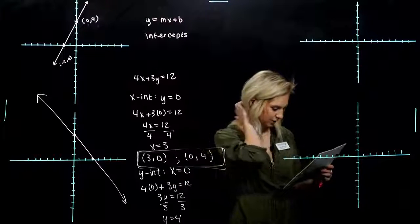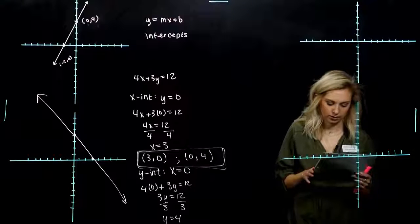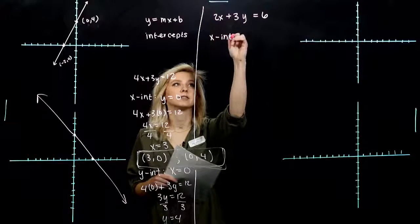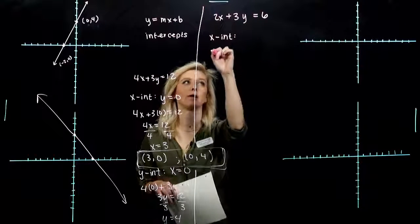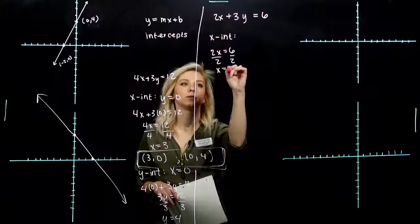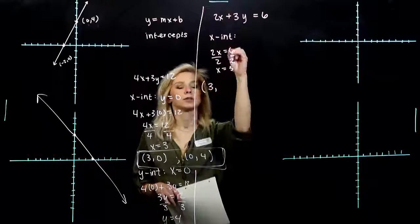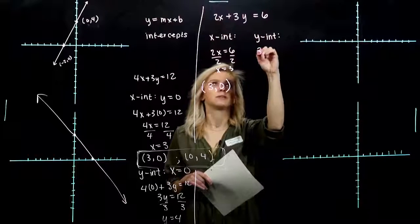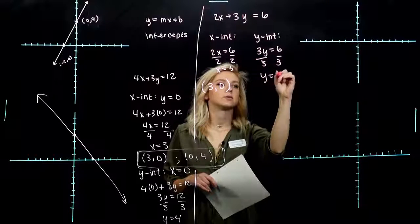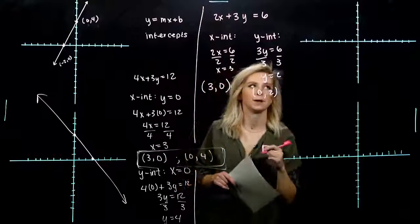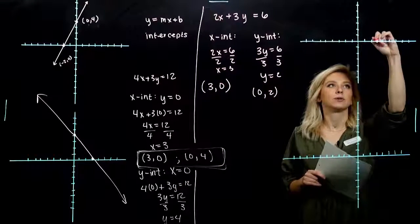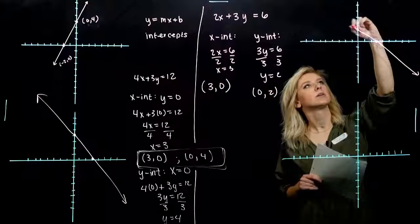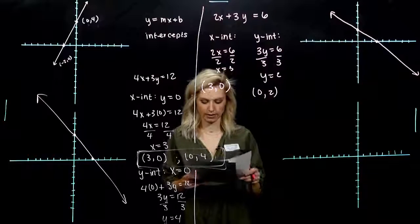Now try the next equation. Find the intercepts and graph using them — again, we're not solving for y. For the x-intercept, plug in 0 for y: that term is gone, leaving 2x equals 6, so x equals 3. The point is (3, 0). For the y-intercept, set x equal to 0: that term is gone, leaving y equals 2. So the y-intercept is (0, 2). Plot both points, draw the line with arrows.